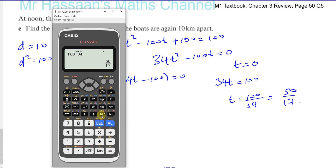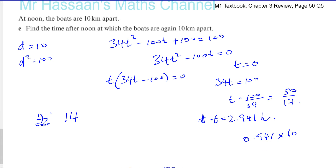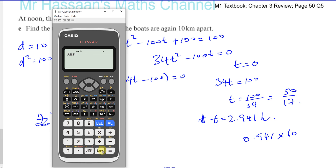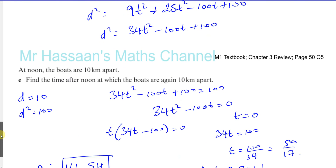So t equals 50/17, which is approximately 2.941 hours. That's 2 hours plus 0.941 times 60 minutes, giving approximately 56.47 minutes. So the time is 1400 hours plus 56 minutes, which is approximately 14:56. That's the time when the boats are again 10 kilometres apart, and that completes question 5.